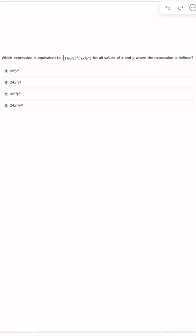Which expression is equivalent to one-third times 6x squared times y squared times 2x to the third y to the fourth for all values of x and y where the expression is defined? So this problem is all about understanding the laws of exponents.